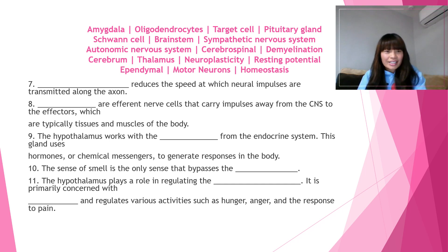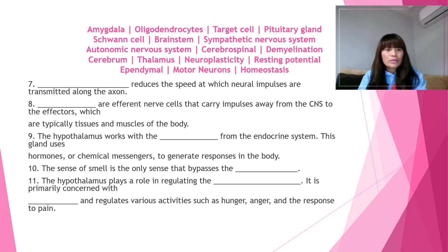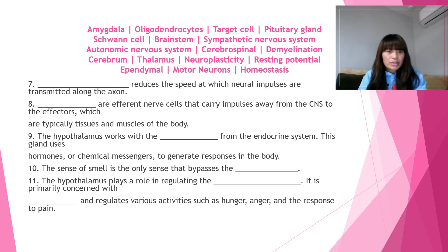Number eight: blank are efferent nerve cells that carry impulses away from the CNS to the effectors, which are typically tissues and muscles of the body. The answer for number eight is motor neurons. Motor neurons are efferent nerve cells that carry impulses away from the CNS to the effectors, which are typically tissues and muscles of the body.